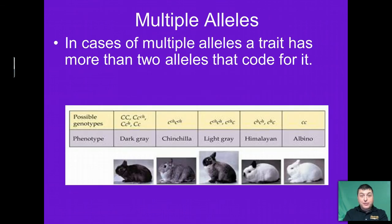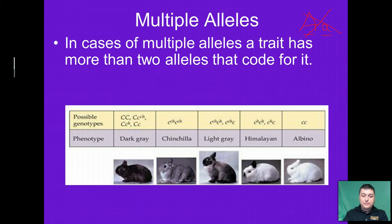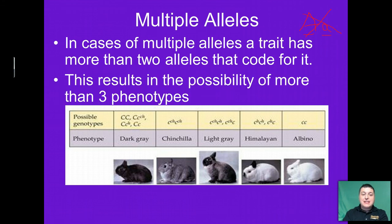Another alternate pattern of inheritance is multiple alleles. In cases of multiple alleles, a trait is going to have more than just the two alleles coding for it — so instead of having perhaps a dominant and a recessive, we're going to have more than two. This results in the possibility of more than three different phenotypes for that given trait.